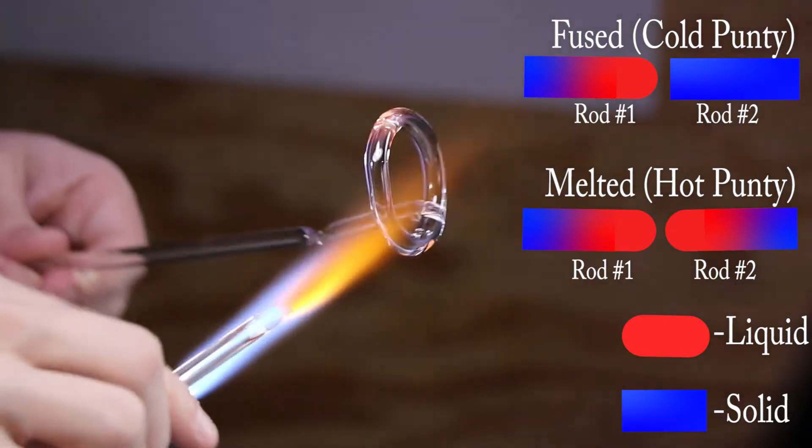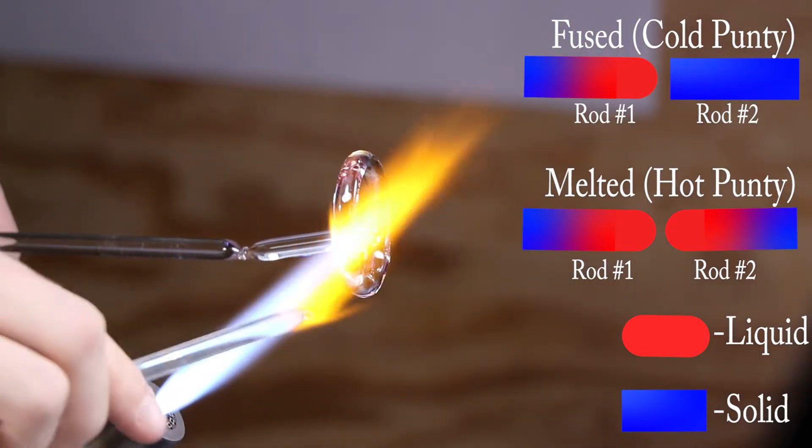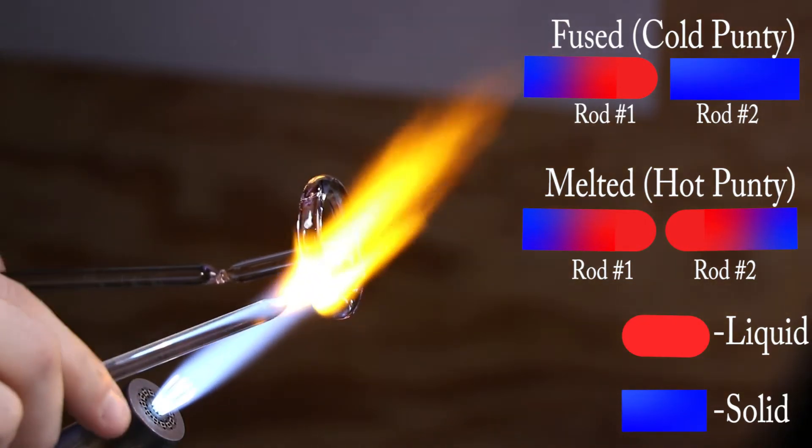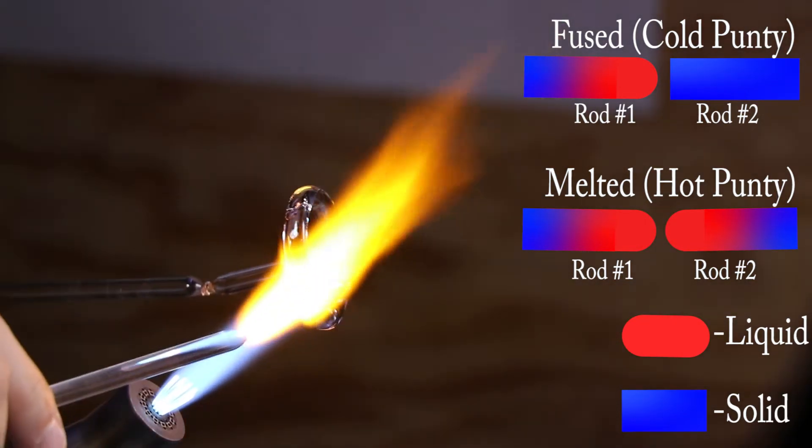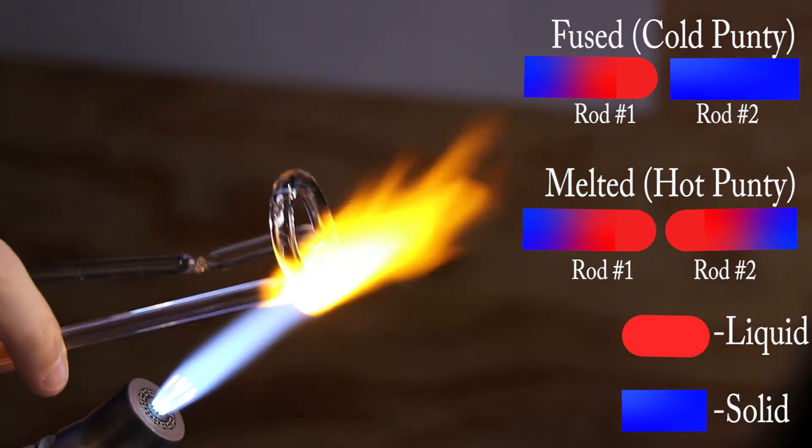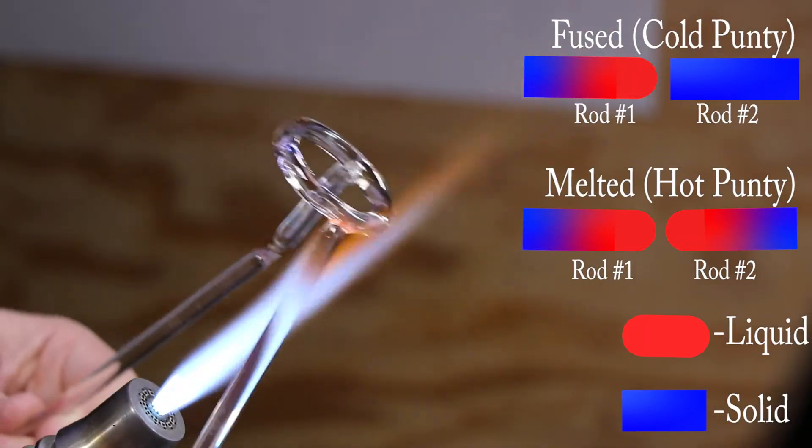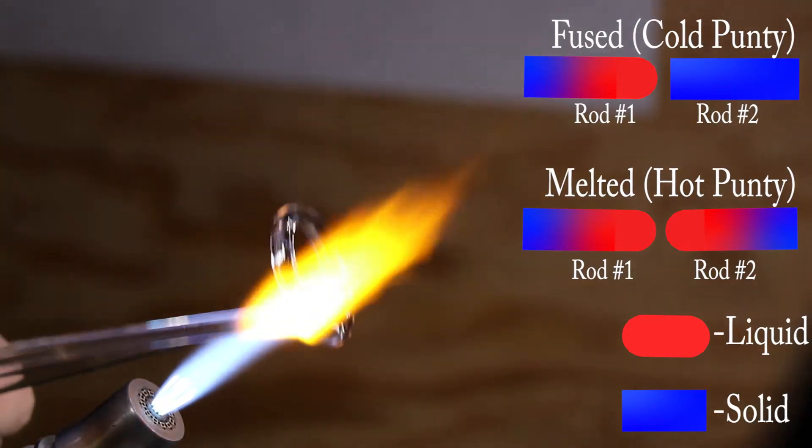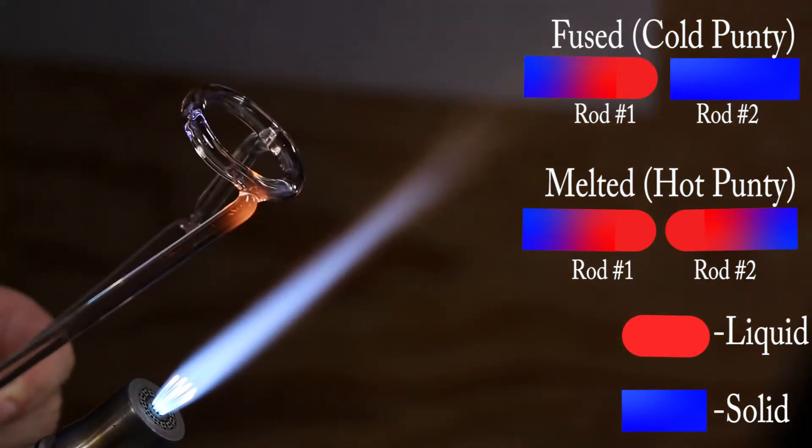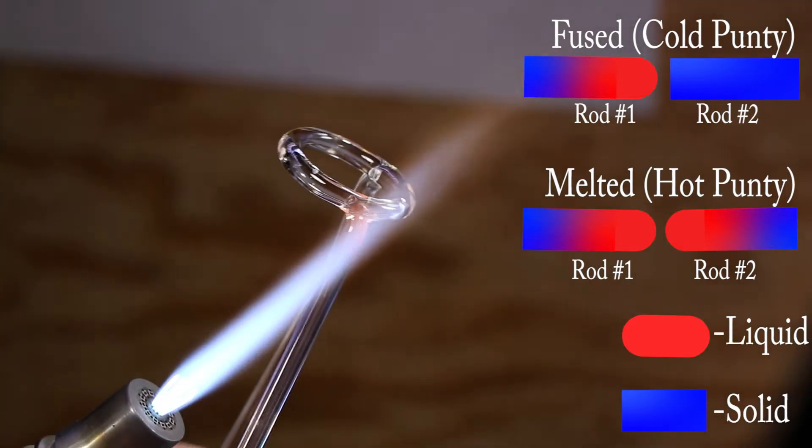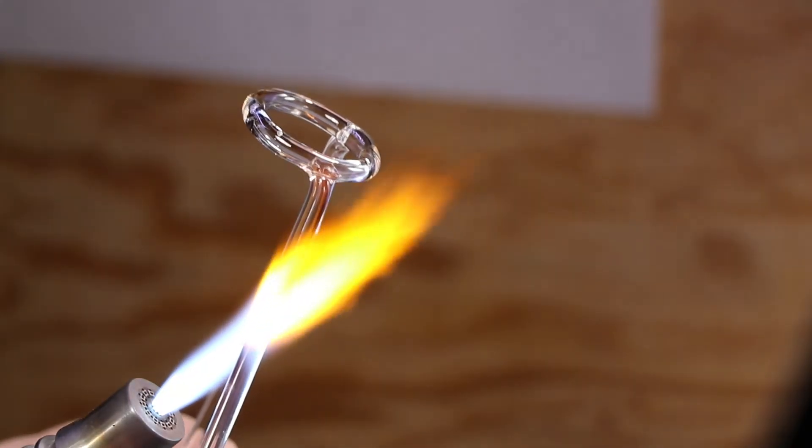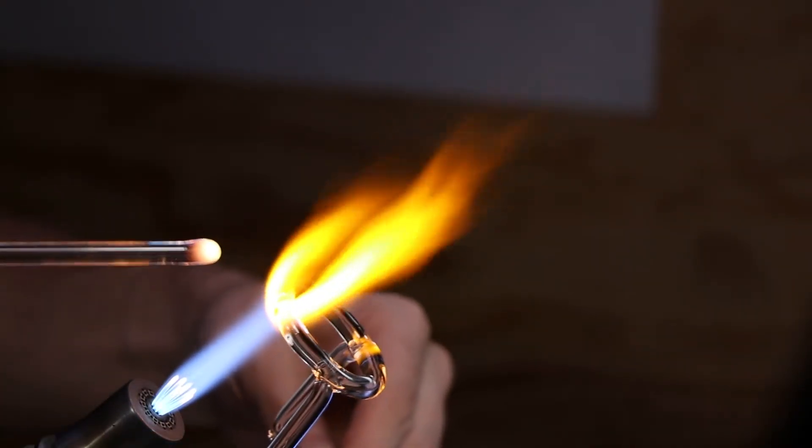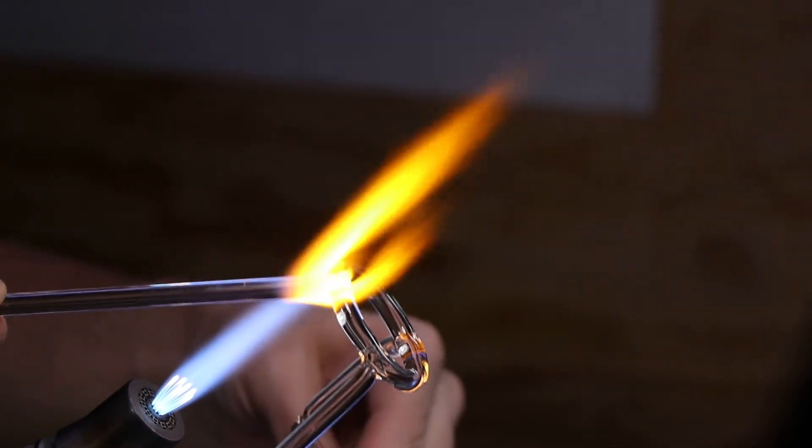But then when you do pendants and marbles and a lot of projects really and you want a fused rod like what you're seeing here on the other end with my left hand, then you can tap it off and break that connection very quickly, save time, and it'll also leave very little glass that you have to fix later.